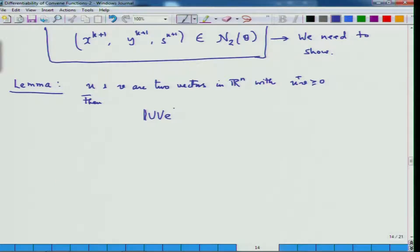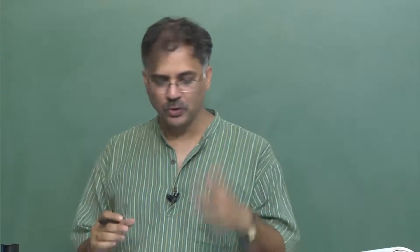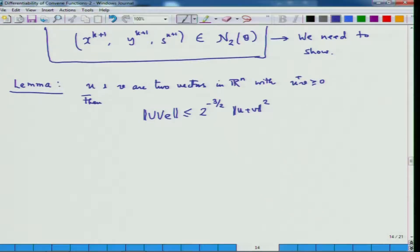Here capital U and capital V denote the diagonal matrices consisting of the components of u and v respectively. This inequality looks very strange, but these sorts of inequalities are helpful. One would ask how to figure out such an inequality — the fact is you do not develop it from thin air; you try to prove the result and while proving it you see you require an estimate like this.